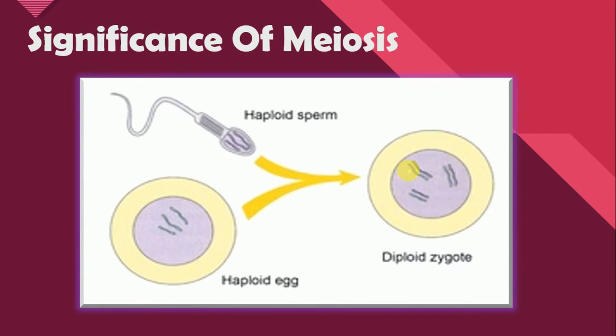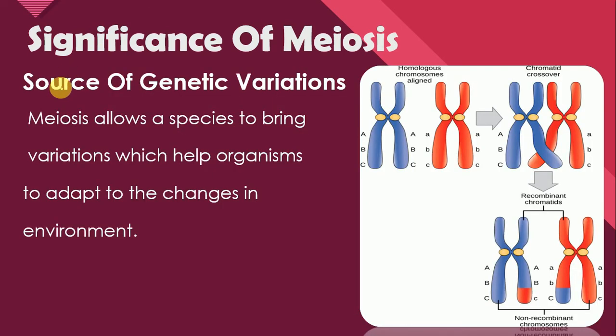Then this zygote will be developed into a complete individual. In this way, due to meiosis, the number of chromosomes is maintained in the next generation.